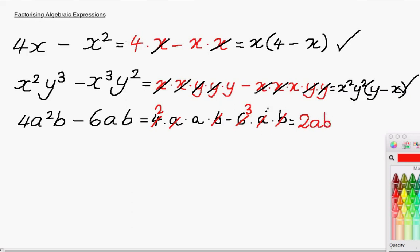Notice there are no more b's in the second expression and no more a's. We only have the number 3 left. In the first expression, we've got a 2 from the numerical part and the letter a left over. So in your brackets here, you have 2a minus 3.